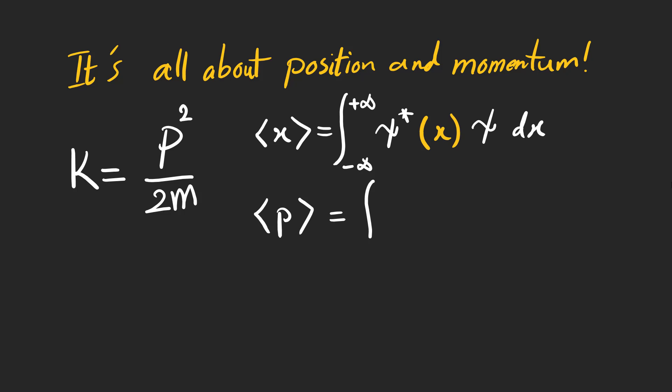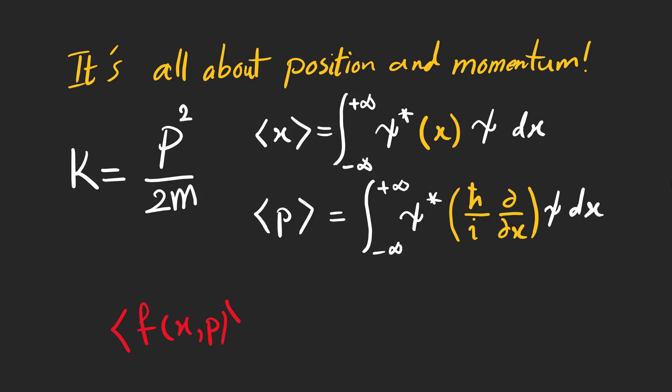We also know that the expectation value for x and p is calculated by these integrals. The expression between psi star and psi is an operator, which is the representation of something in quantum mechanics. To calculate the expectation value of any quantity like f, we can simply replace p by h bar over i and the partial derivative of x and put it between psi star and psi.